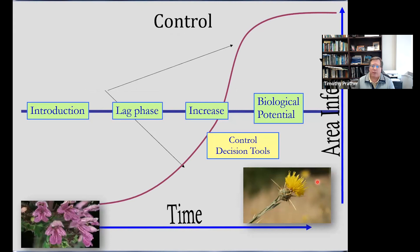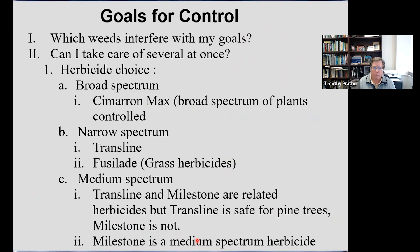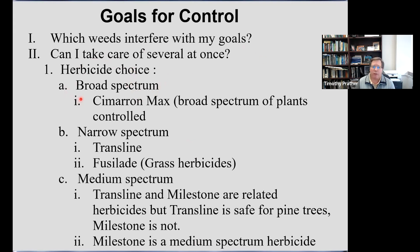Then you look at control — going back to the same timeline, now looking at a situation where something is well distributed and we're looking at other strategies. When we get to a control level, you start thinking: which weeds are going to interfere with my goals? When looking at a noxious weed, part of your goal is going to be complying with the noxious weed law, so you need to look at what category that weed is in. Quite often these plants interfere with other aspects of what we want to do with our land. Questions include: can I take care of several weeds at once? There's a lot of diversity in terms of herbicide choices.